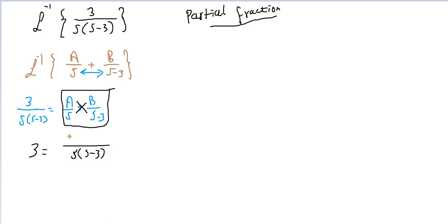Then A multiply by s minus 3. Plus B times s. Again, the down is equal. Again the down is equal. So the up will be also equal.